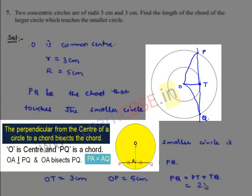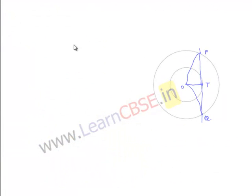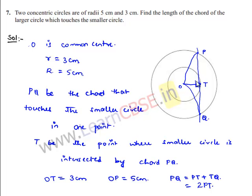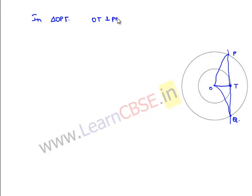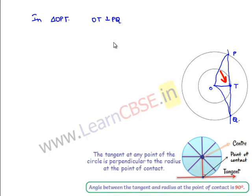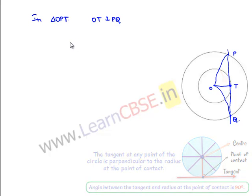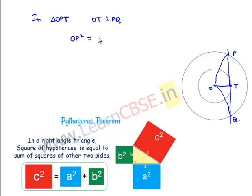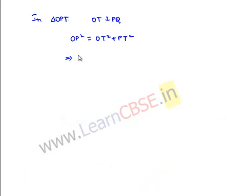In triangle OPT, OT is perpendicular to PQ since the angle between radius and tangent is 90°. By Pythagoras theorem: OP² = OT² + PT², so 5² = 3² + PT², giving PT² = 25 − 9 = 16, therefore PT = 4 cm.